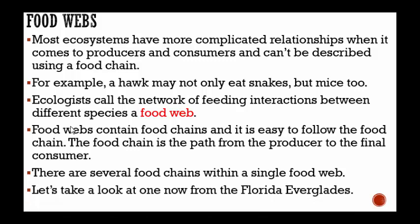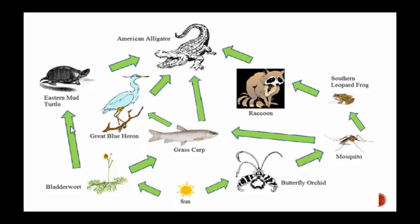We're going to take a look at one from the Florida Everglades. It may look a little overwhelming at first, but all you have to do is follow the arrows. Starting with the sun — the sun gives the bladderwort its energy through photosynthesis. The bladderwort is then eaten by the Easter mud turtle, which is then eaten by the American alligator. And that's one food chain.